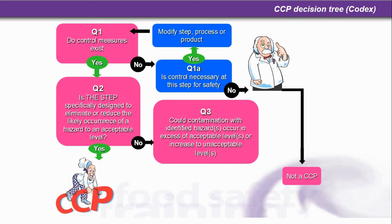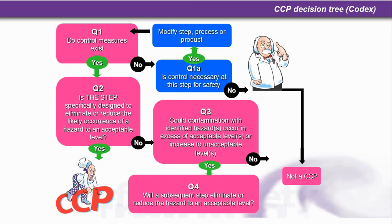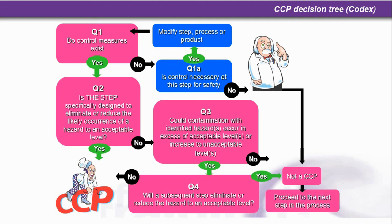If the answer to question 2 is no, move to question 3: could contamination with identified hazards occur in excess of acceptable levels, or increase to unacceptable levels? If the answer is no, it's not a critical control point. If it's yes, question 4: will a subsequent step eliminate or reduce the hazard to an acceptable level? If yes, it's not a critical control point. If no, it is a critical control point. If it's not a critical control point, proceed to the next step in the process.